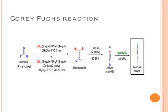This first step is a Wittig type of step. Method two is generally preferred because it gives higher yield of dibromo olefin and also simplifies the isolation procedure. The second step is conversion of dibromo olefin to lithium acetylide, which on hydrolysis generates terminal alkyne.